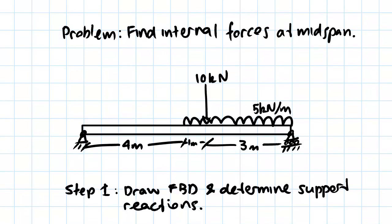So what we have here is a simply supported beam with one end supported at a pin joint and one end at a roller support. We've got a 5 kN per meter uniformly distributed load that acts over 4 meters of the span and a 10 kN point load that acts 3 meters from the right support and 5 meters from the left support.